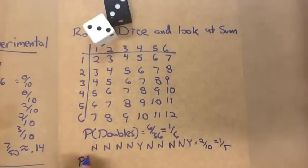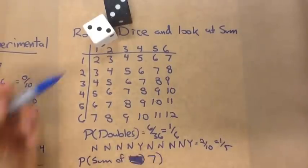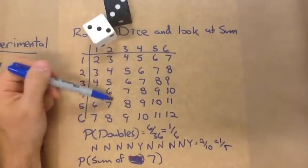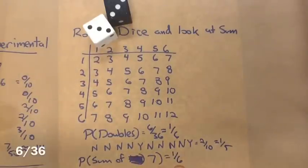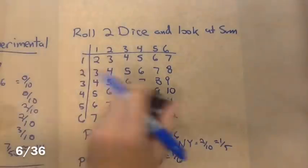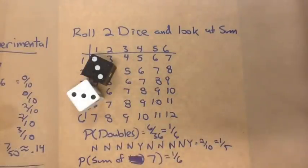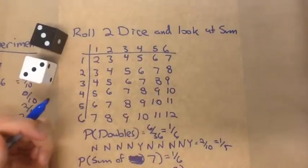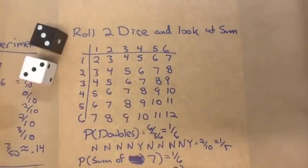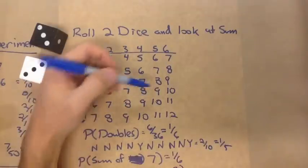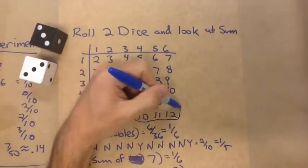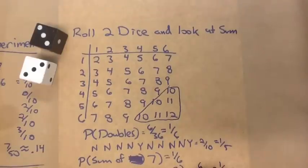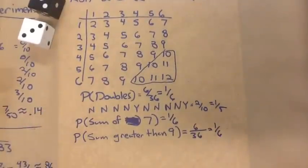What if we did the probability of a sum of seven? We look at all the occurrences in the table — there are six occurrences — so that is also one-sixth. Then what about the probability of a sum greater than nine? Looking at all possible values and how many ways it could occur across the 36 outcomes, the ones greater than nine form a set of six, so we'd have one-sixth again.